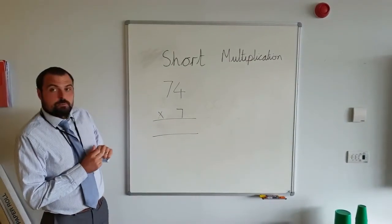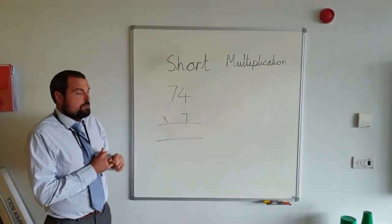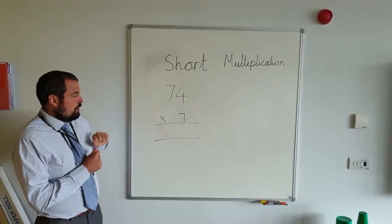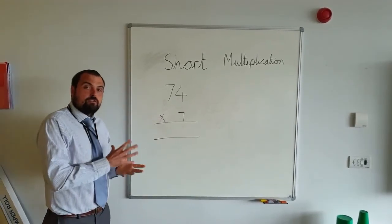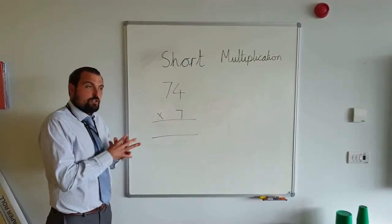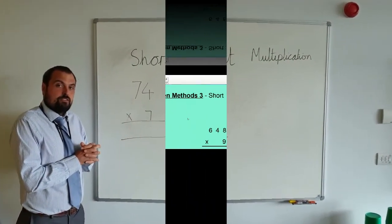This time we're going to look at short multiplication, so how we multiply a two-digit number by one-digit number. We'll also look at three-digit by one-digit and using this column method. It's very straightforward once you've got it, and we'll just look at how to do this, work through a couple of examples together. So watch on and enjoy the video.